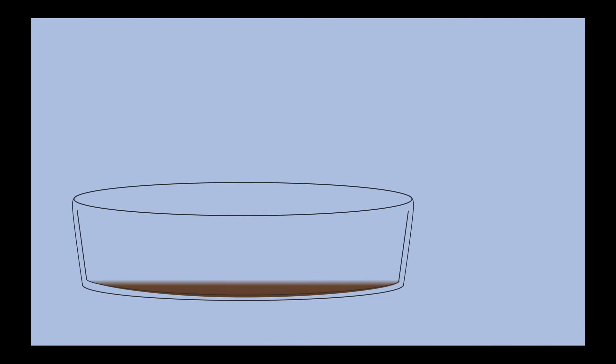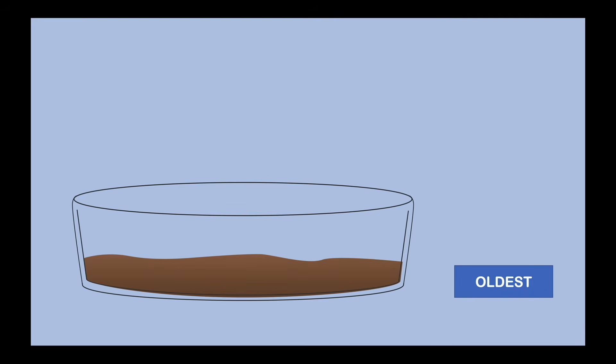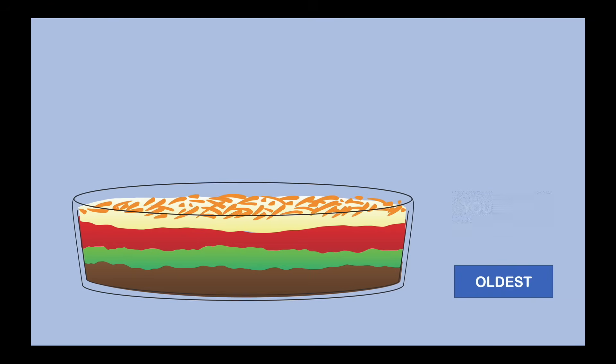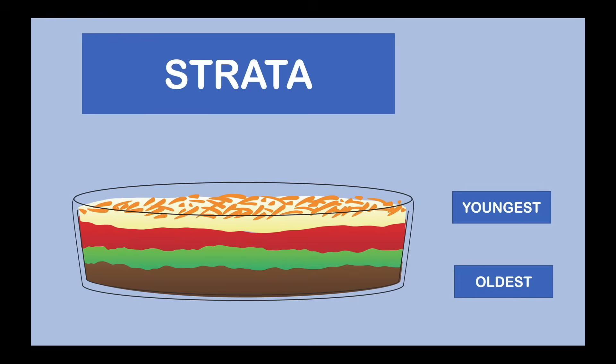It's kind of like five-layer bean dip — a tasty treat you might have at a party. You put the beans at the very bottom, and that is the oldest layer in the bean dip. On top of that, you put some guacamole, and then some salsa, some sour cream, and a little cheese on top — the cheese is your youngest layer. Scientists call each one of these layers in rocks strata, so let's call them strata in our bean dip too. It's a party for scientists.